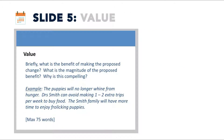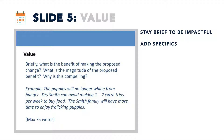Now, present the value as briefly as possible. Describe the benefit of making the proposed change. What is the magnitude of the value or benefit? Why is this compelling? Following the example of the puppies, the puppies will no longer whine from hunger. Dr. Smith can avoid making one to two extra trips per week to buy food. The Smith family will have more time to enjoy frolicking with their puppies. Specifics here are one to two extra trips — not just extra trips — which quantifies the value and makes it more relatable for the audience.